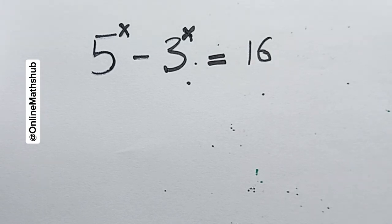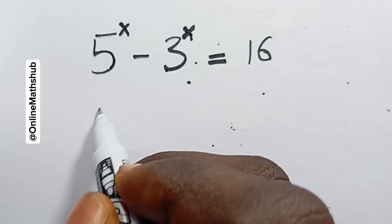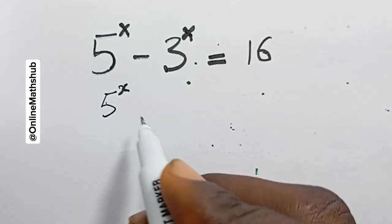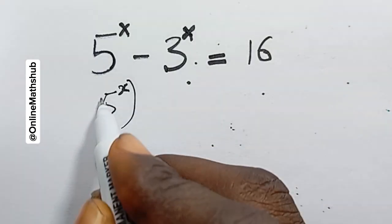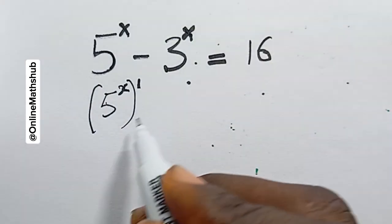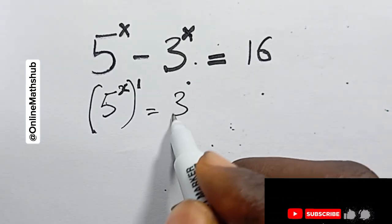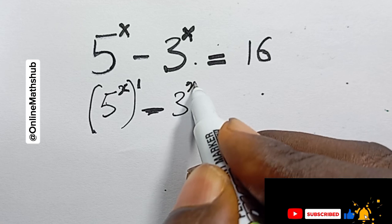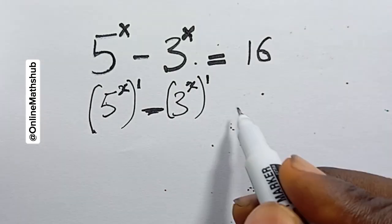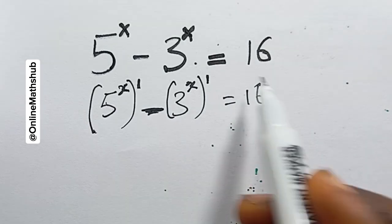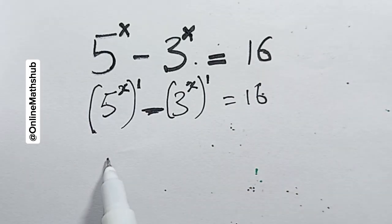Hello friends, welcome back to Online My Shop. Let us solve this problem. To solve this, you just need to remember that 5x here is also the same as 5x raised to the power 1. It's equal to minus 3x, which is also power 1, equal to 16 — basically the same thing.